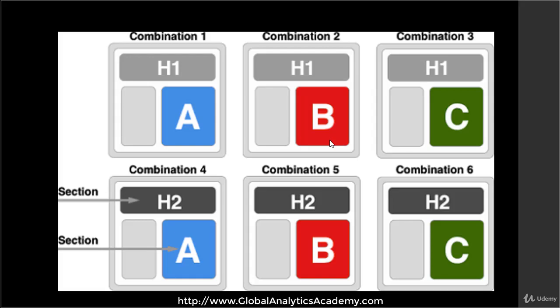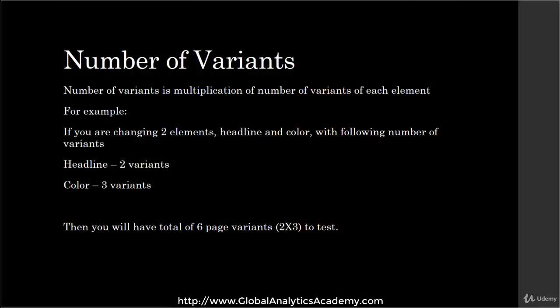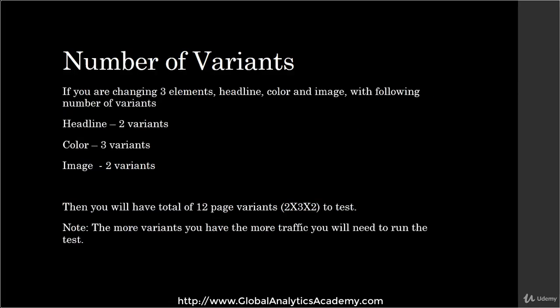If it's not clear at this point, don't worry — it'll become clear as we create a test in future lectures. Keep in mind that the number of variants required to test is a multiplication of the number of variants of each element. For example, if you are changing two elements — headline and color — with two headline variants and three color variants, you will have six page variants. If you change three elements — headline, color, and image — with two, three, and two variants respectively, you will have 12 page variants. The more variants you have, the more traffic you will need and the longer the time frame required, so keep that in mind when running multivariate tests.